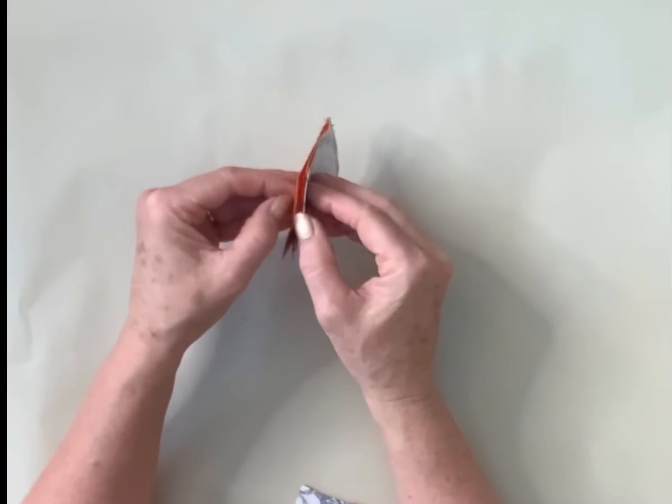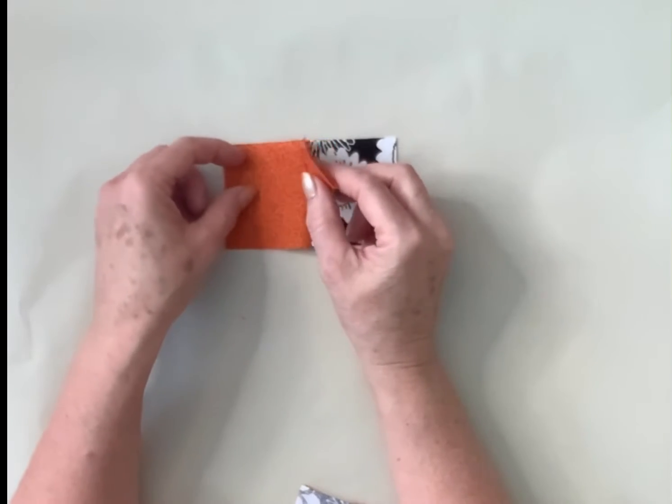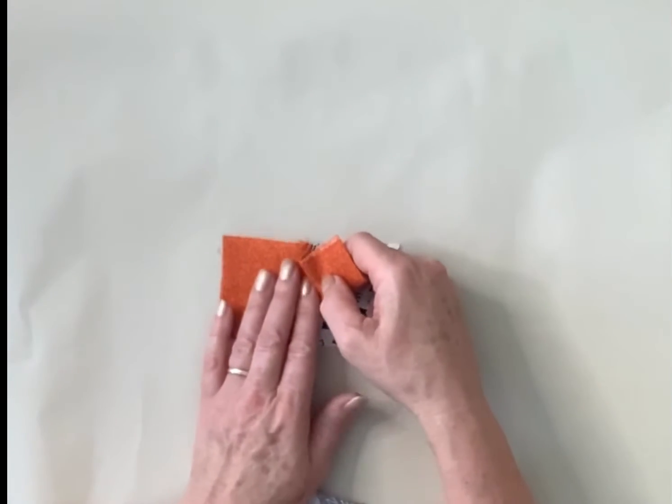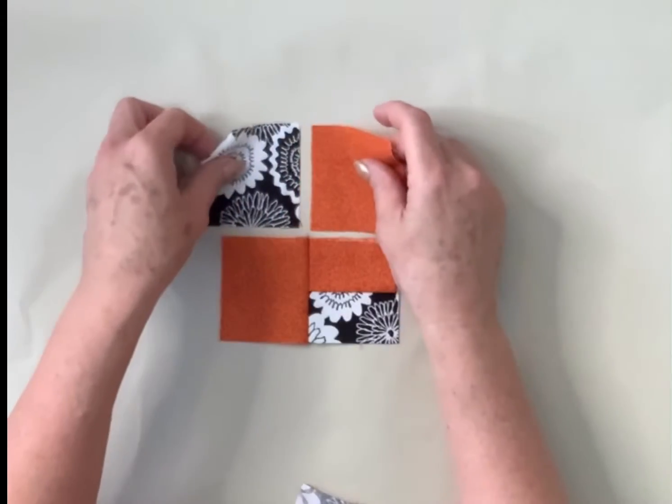You've now got this shape with this sticking out of the middle. We now need to put the other piece on. What I do to make this easier I actually place my fabrics in opposites.